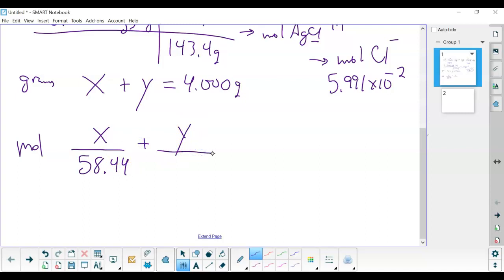...potassium chloride. So what we've done is we've taken the grams divided by the molar mass to give us moles, and we know that should equal our 5.991 × 10^-2 moles.